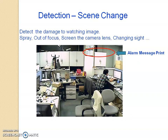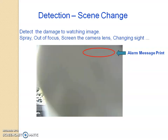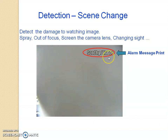Next is scene change detection. As you can see, if the camera is focused on a scene and somebody comes and sprays foam onto it, the scene changes. The system detects this change, raises an alert, and sends that information to the user.